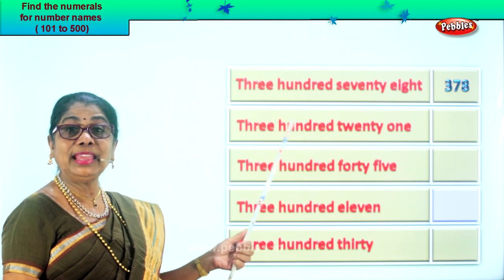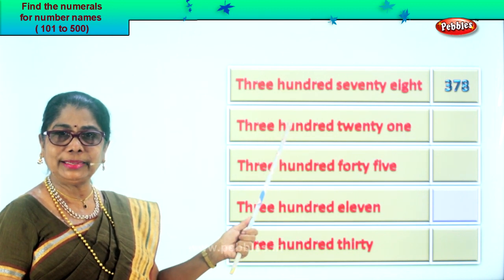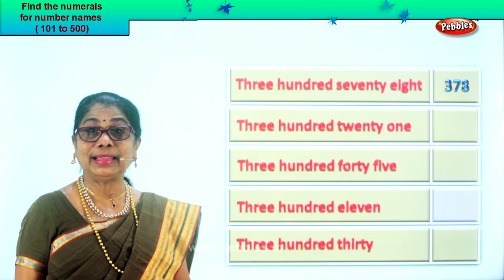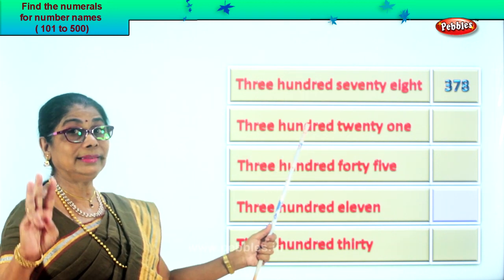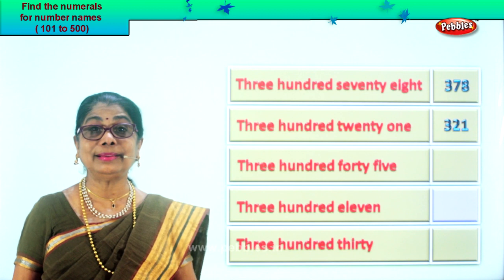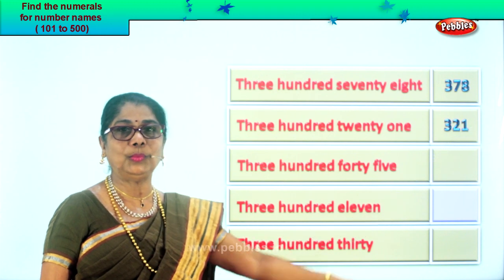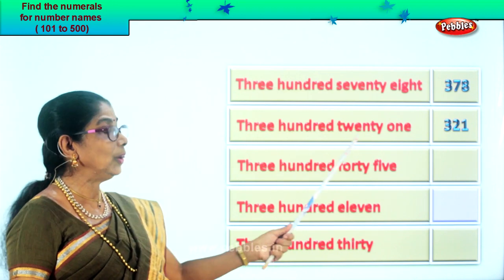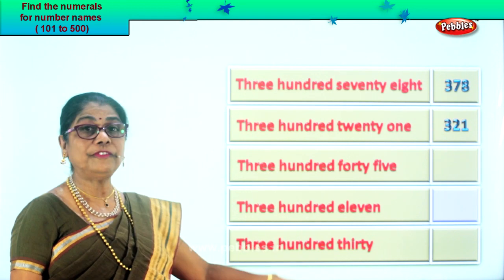Next: three hundred twenty-one. Three in the hundredth place, two in the tens place, one in the ones place. Three hundred twenty-one. Three hundred twenty-one. Read it again: three hundred twenty-one.